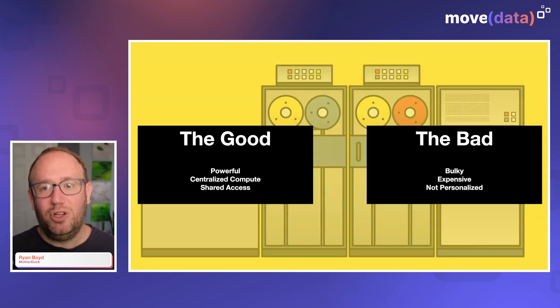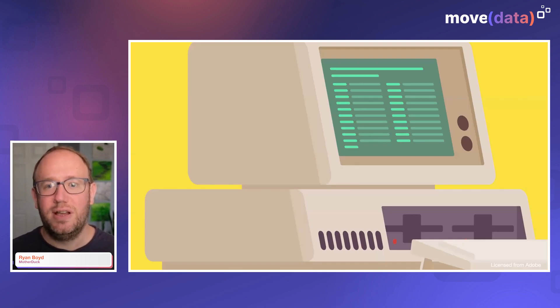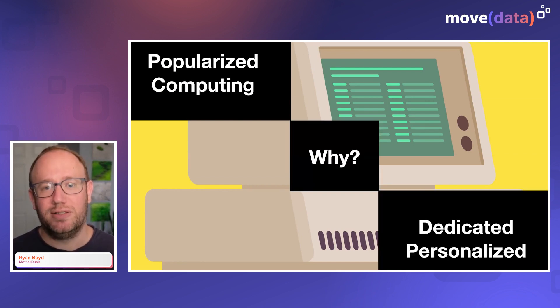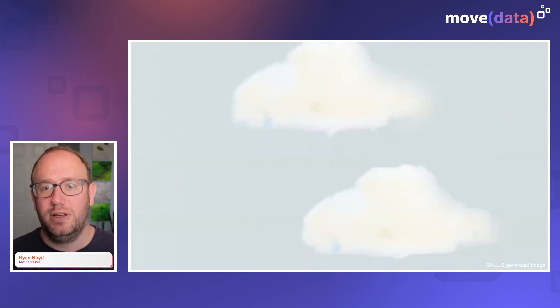But they came along with both some good and bad parts. On the bad side, they were bulky and expensive and not very personalized. But then came the PC in the 1980s. These really popularized computing because they were dedicated and personalized. You could run your programs whenever you wanted, and you didn't need to worry about the work of others impacting yours. The cloud data warehouse is the modern day mainframe — a shared environment configured to work best for the operators and the average user, not really personalized for you as an individual.